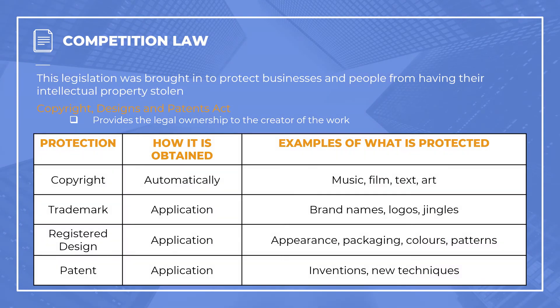Finally, we have competition law — the most common area to pop up in exam questions. Competition law basically stops people stealing others' intellectual property; you can't just look at a device and copy it like-for-like, as that would be breaking the law. The Copyright Designs and Patents Act protects the legal ownership of the creator and is broken down into four sections: copyright, trademark, registered design, and patent. Copyright protection is automatic — anything you create, you automatically have copyright protection as long as you can prove you created it.